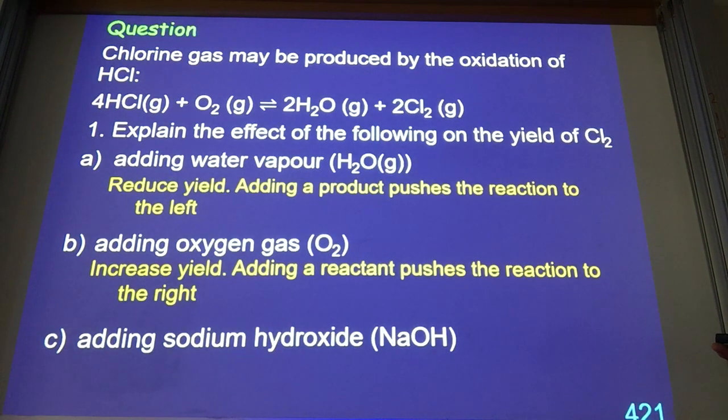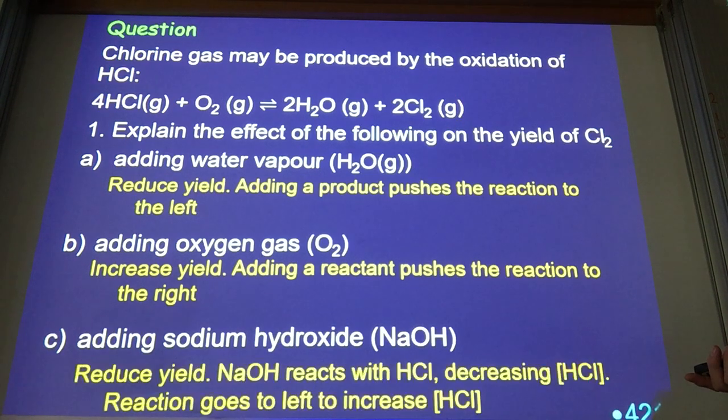If we add sodium hydroxide, what effect is that going to have? Well, sodium hydroxide is not in this equation. However, what do we see? Hydrochloric acid. What happens when we add a base to an acid? It's going to react with the acid. We're going to get a sharp drop in HCl, so we will remove the reactant. The reaction is going to move to the left.